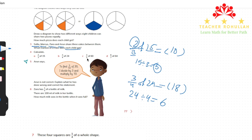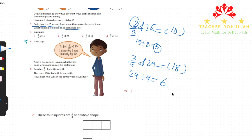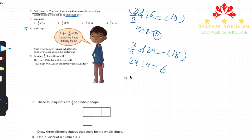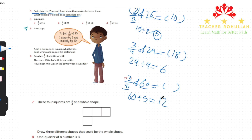Part c shows three-fifths of 60. Three-fifths of 60 means 60 is divided into five equal parts and the answer is three of those five parts. 60 divided by 5 is 12. We can verify: 12 times 5 equals 60, based on the fact family of multiplication and division.